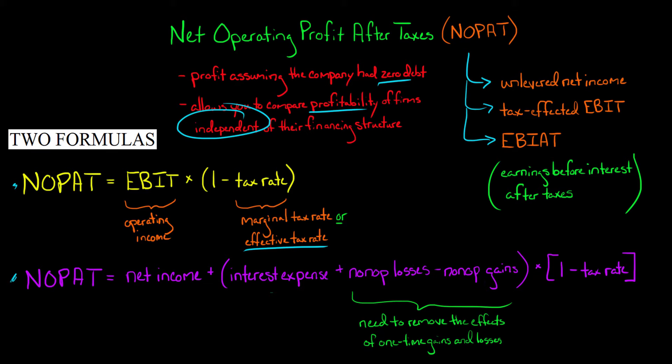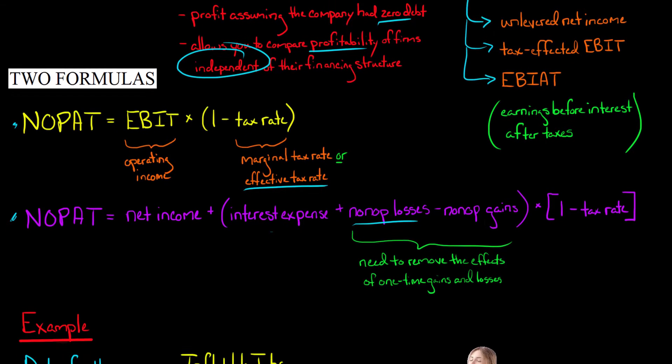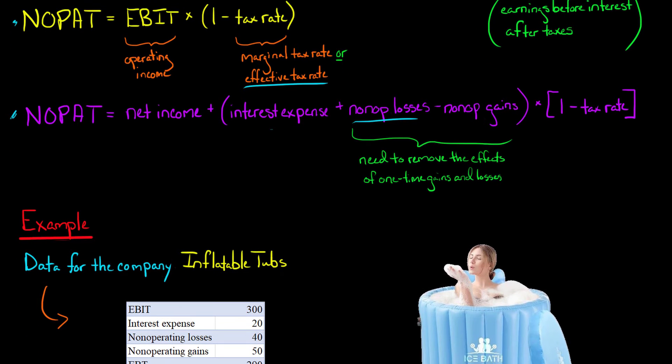If you're wondering, why are we adding in these non-operating losses, subtracting non-operating gains as part of that adjustment? What we're trying to do is remove the effects of one-time gains and losses. For example, there might be a non-operating loss that's a one-time restructuring charge, and we want to factor that out when we're trying to calculate the company's core operating profitability.